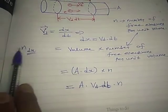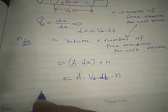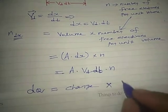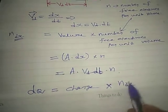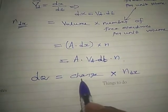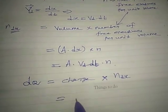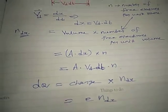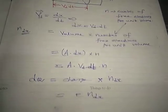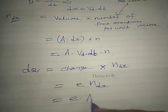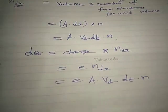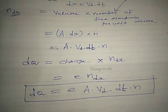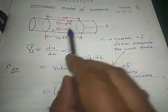This is the total number of electrons available in the volume of length dx. The total charge dq is equal to the charge of each electron multiplied by the number of electrons. So dq = e × A × vd × dt × n.